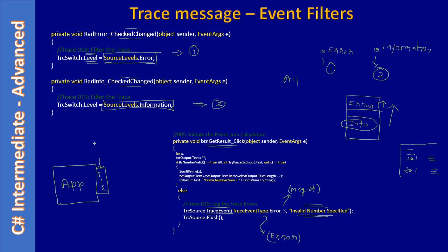Previously we called the method TraceInformation to log messages for each prime number found. Now using TraceSource we use one more method — the TraceEvent method. You can use TraceEvent with TraceEventType.Information and it will be equivalent to calling TraceInformation directly. TraceInformation sends information messages directly, but with TraceEvent you have to specify the type using TraceEventType.Information.